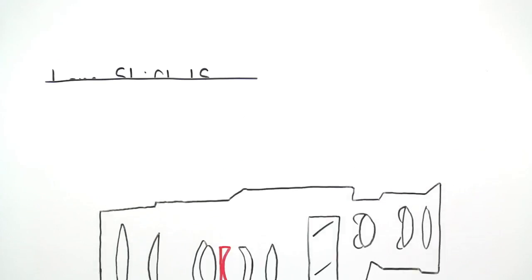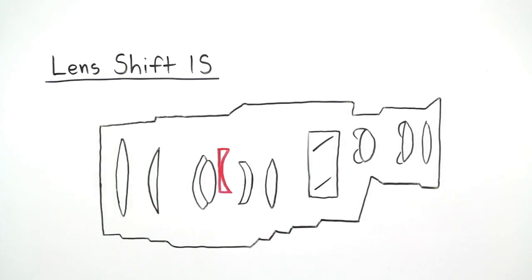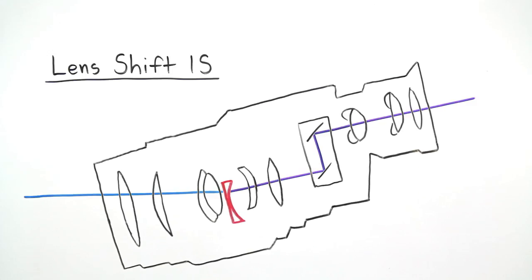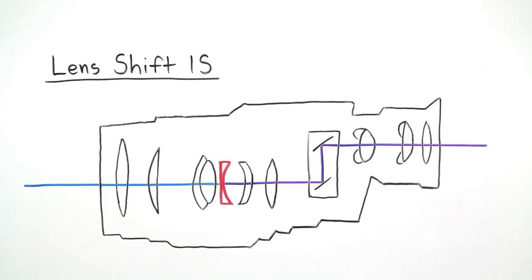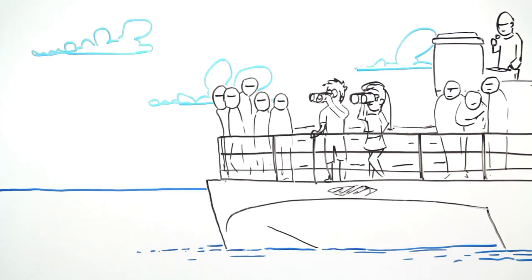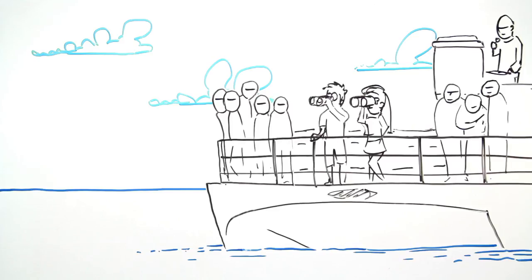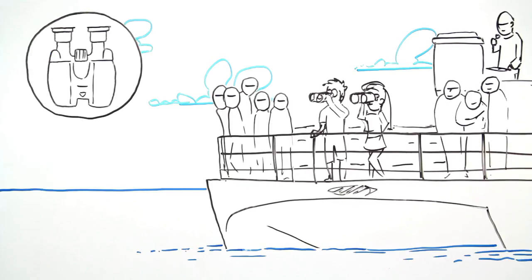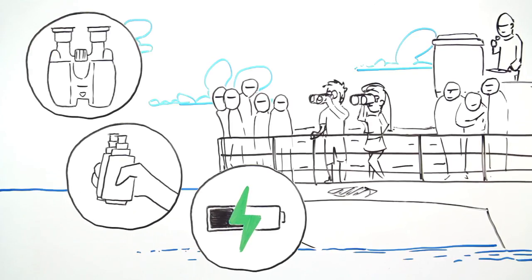We also offer Lens Shift IS, which uses a continually adjusting gyro mechanism that moves the correction lens both vertically and horizontally to deliver sharp images even in the most unstable environments. This Lens Shift IS system also allows for a compact design with a better grip and improved power efficiency.